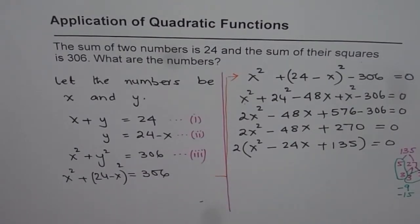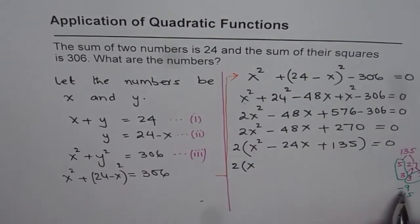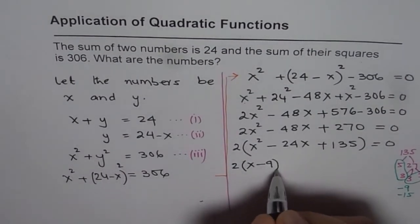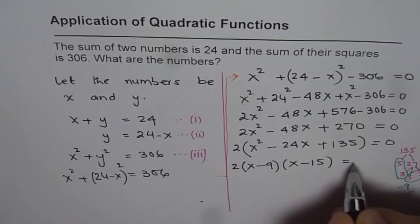So the numbers are minus 9 and minus 15. When you add them you get minus 24. That is the kind of rough work which may be required to factor.